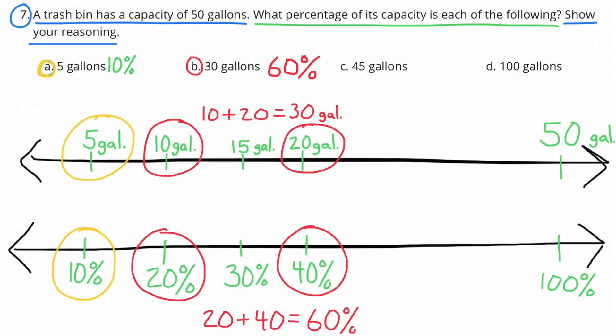And the 20% that represents the 10 gallons is added to 40% that represents the 20 gallons. So 20% plus 40% equals 60%. So 30 gallons is 60% capacity of the 50 gallon trash bin.